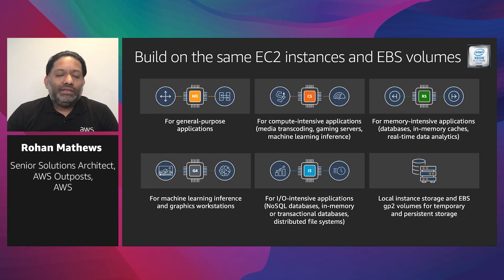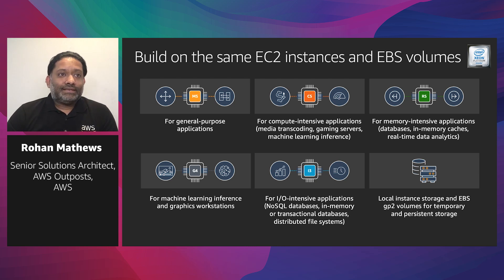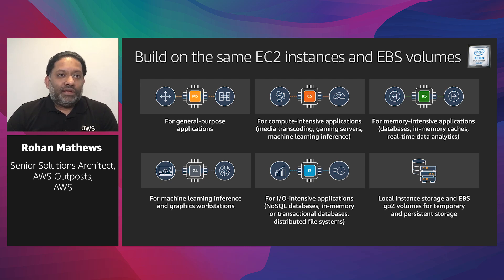The AWS Outpost catalog includes options supporting the latest generation Intel EC2 instances featuring second-generation Intel Xeon processors, with or without local instance storage. You get C5 instances for compute-optimized workloads, M5 general-purpose instances, R5 memory-optimized instances, graphics-optimized G4DN, or I3N storage-optimized instances. Outpost offers local instance storage and EBS block storage in the form of GP2 persistent block storage — just as in the region, you can use EBS GP2 volumes for boot or data volumes and attach or detach them to EC2 instances on your Outpost.